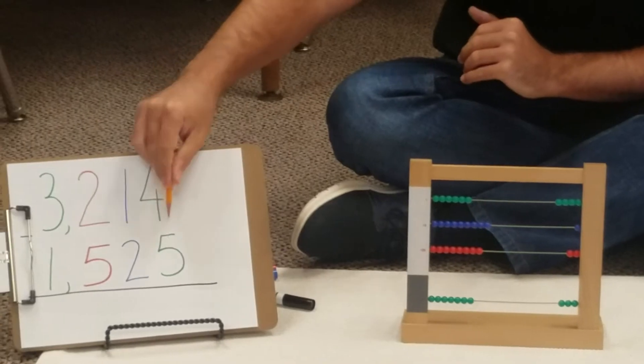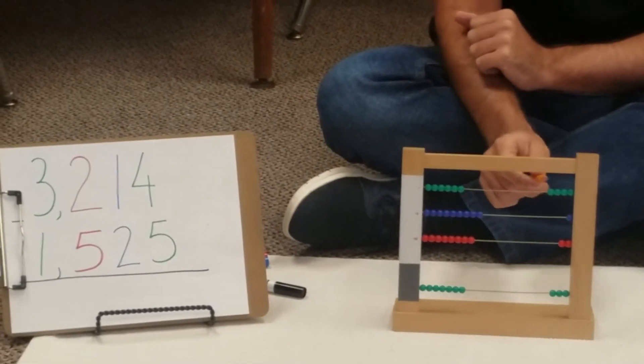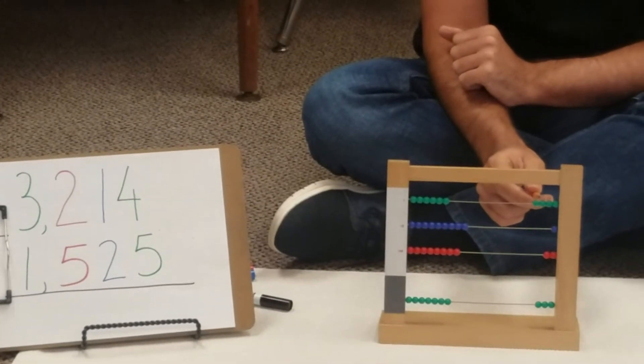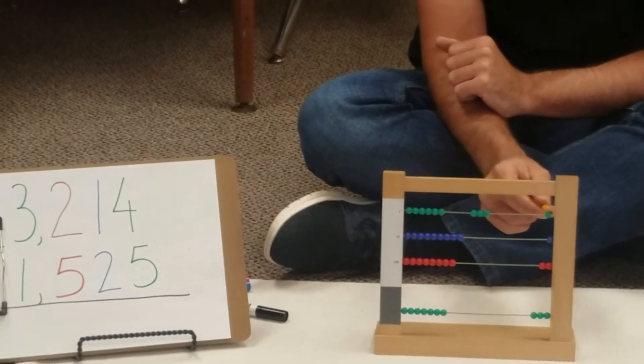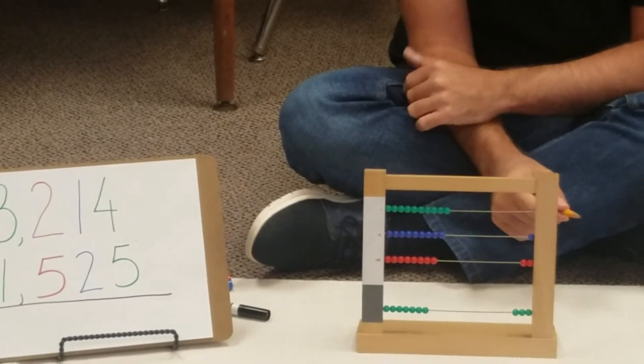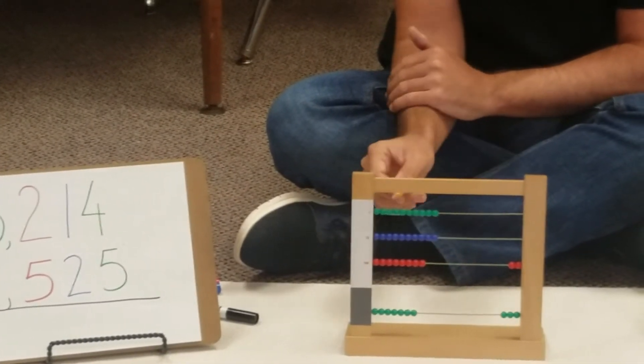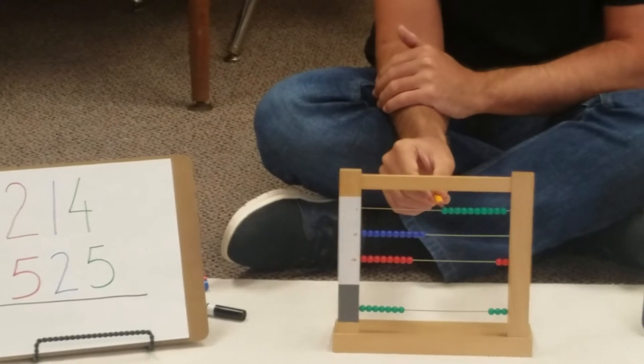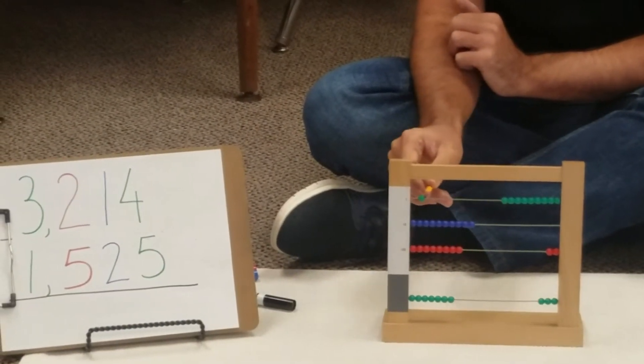Okay, so now we need to take away five units. We go the other way that we did with addition. So we take one, two, three, four units, and now we don't have more. We need to ask our friend the tens to give us one ten, and one ten is ten units. We already took away four units, and now we're going to take the fifth one.